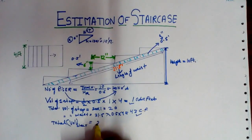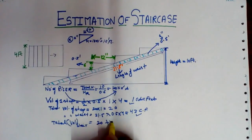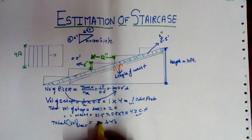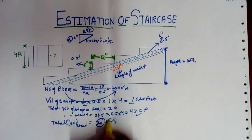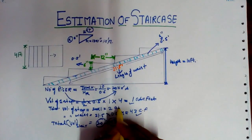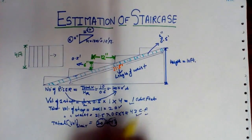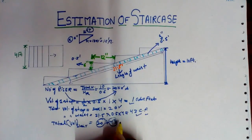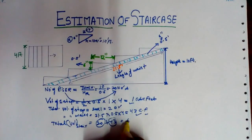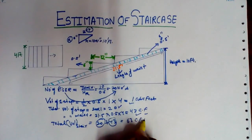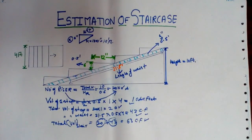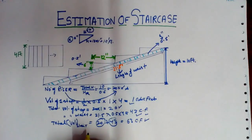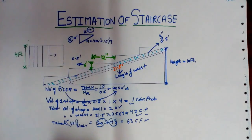So the total volume of the staircase is equivalent to 20 plus 43 — that is the volume of steps plus the volume of the waist — which gives us 63 cubic feet.